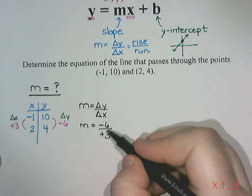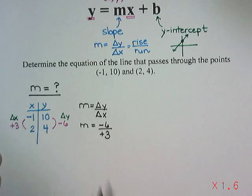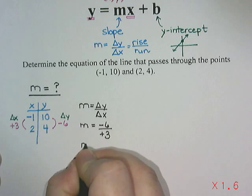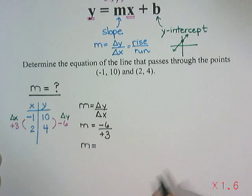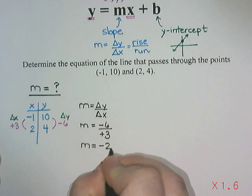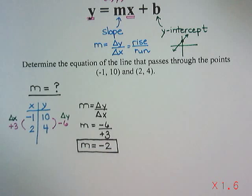So my delta y is negative six. The delta x is positive three. Now I check to see does negative six divide nicely by three? If it doesn't I will leave it as a fraction. But in this case it does actually work out nicely. Negative six divided by positive three is negative two. So my slope of this line is negative two.